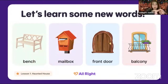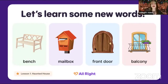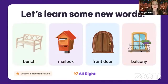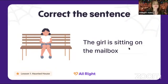Now once again, repeat after me and we will play a game. One: bench. Two: mailbox. Three: front door. And the last one: balcony. Now it's time to play a game — I've got a sentence for you. Maybe it's right, maybe not. Find the mistake! Let's read: 'The girl is sitting on the mailbox.'